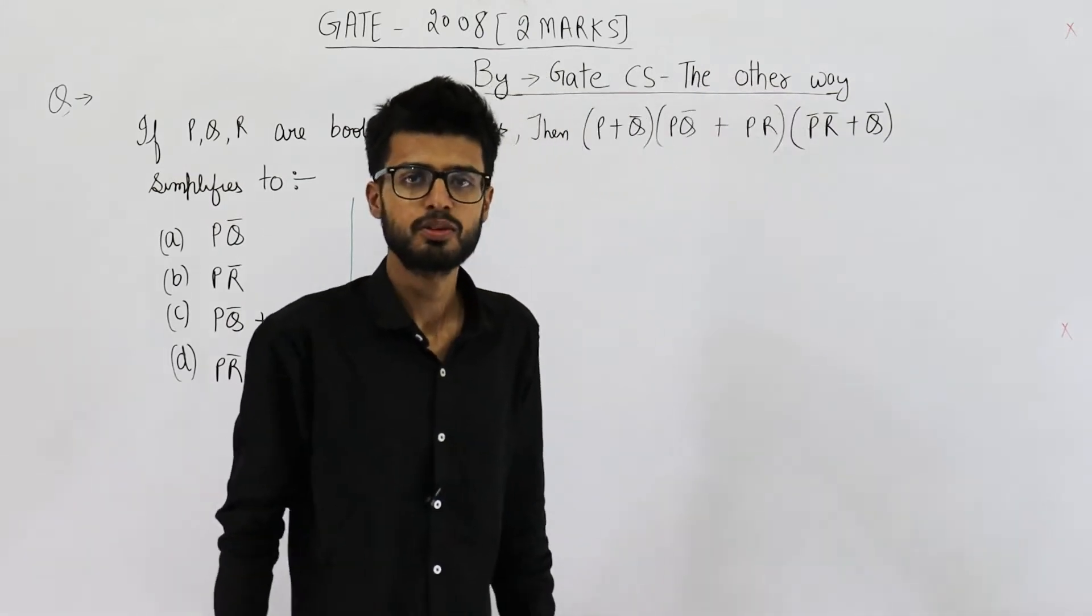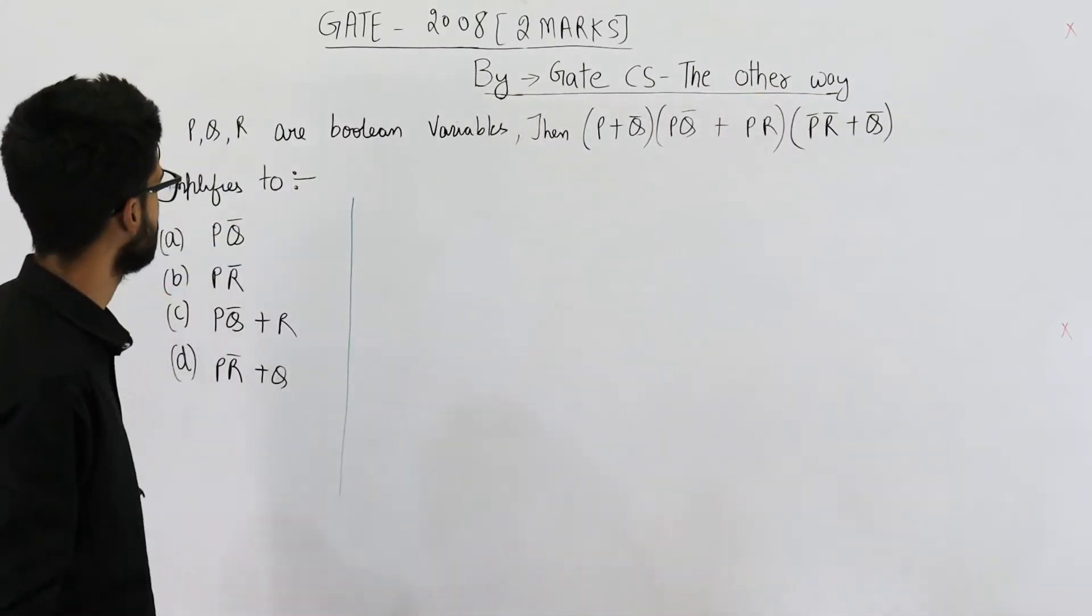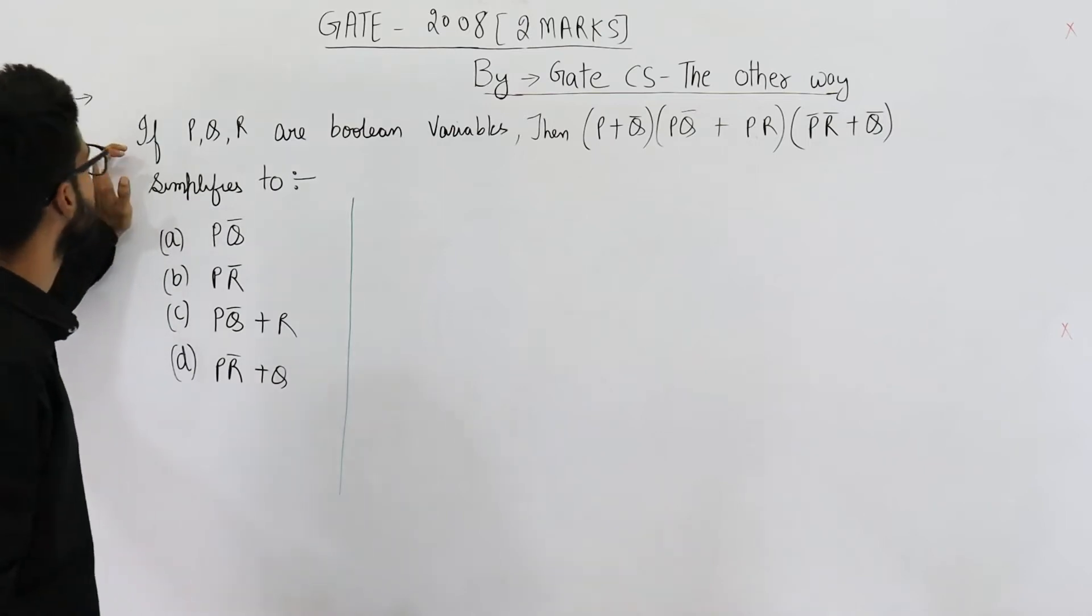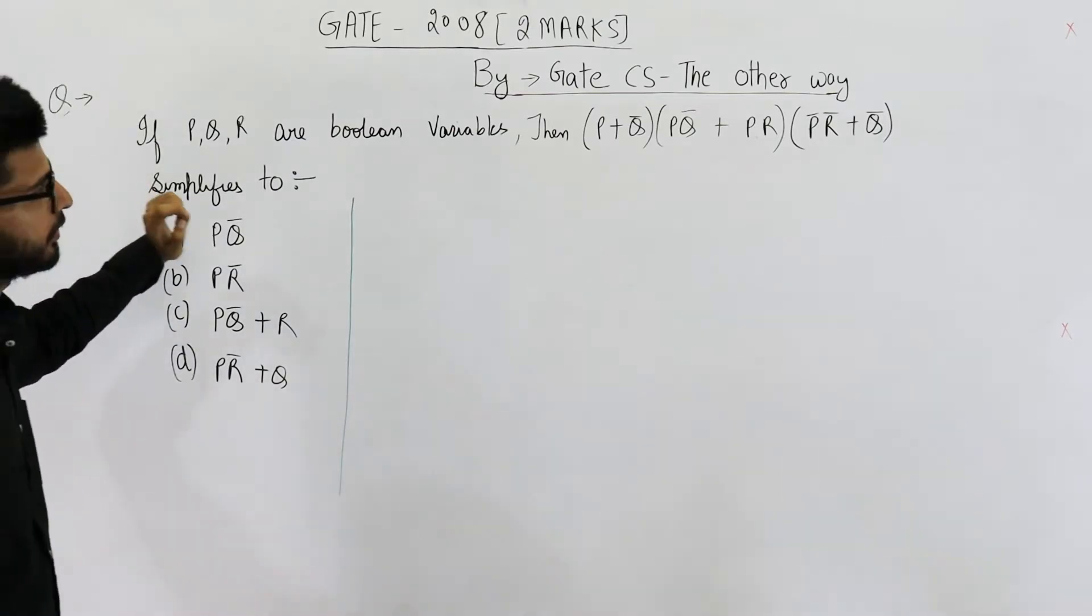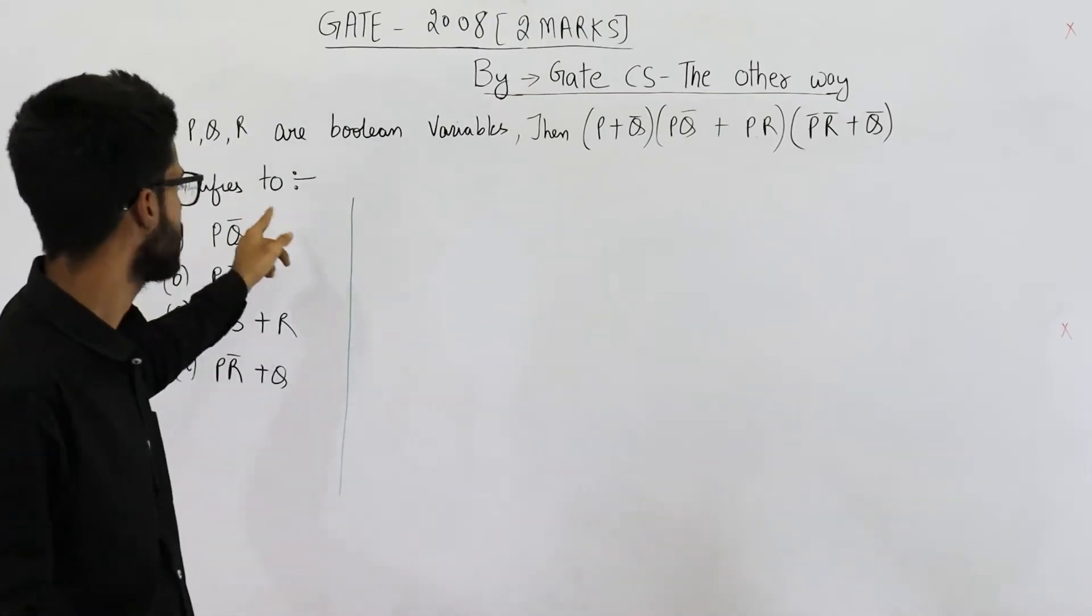Welcome back students. This two marks question is from GATE 2008. The question reads: if P, Q, R are boolean variables, then this simplifies to.